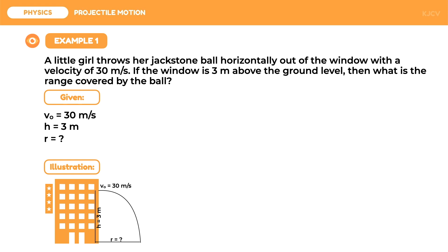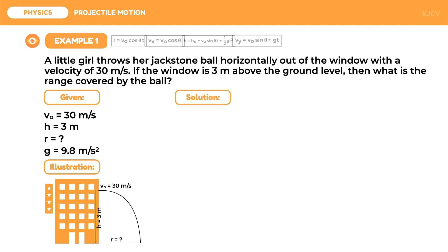Although not mentioned, we can still include the acceleration due to gravity as part of the given. Gravity here has a positive sign because as the projectile moves downward its velocity is increasing, thus accelerating in the direction of gravity. After identifying the given quantities, we can now proceed to the solution. Looking at the four formulas, we cannot directly solve for the range because we do not have a value for time.